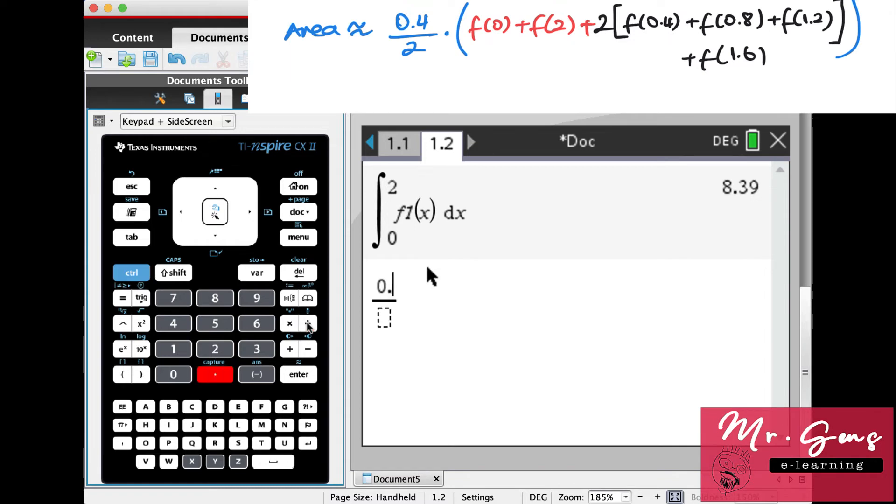Height is 0.4 divided by 2, times—I open a bracket, please pay extra attention for the brackets. Our function is defined as f1, so I will start with f1(0) plus f1(2). And all the others will be doubled, so I open another bracket and I'll be writing them here: f1 of 0.4...